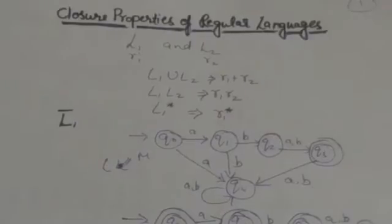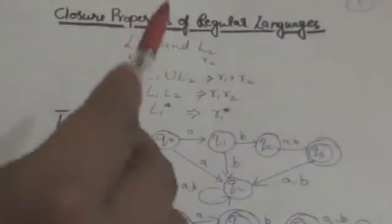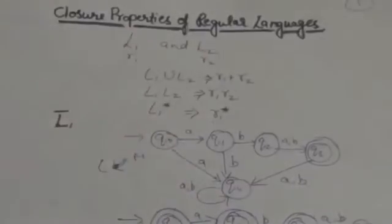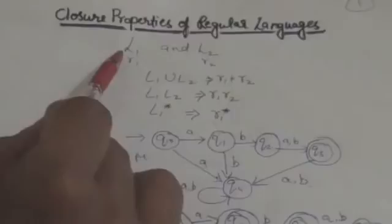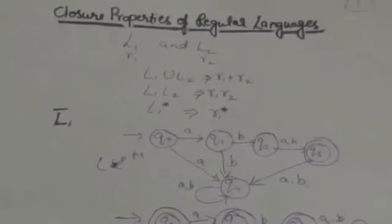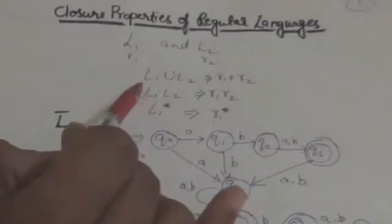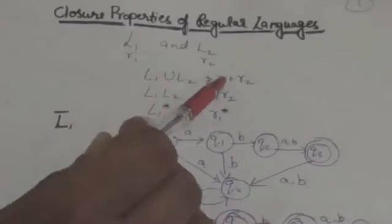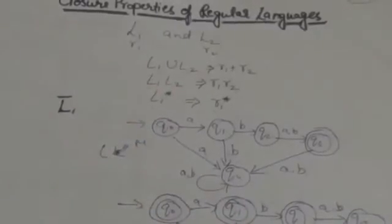Hello friends, welcome back to the tutorial. Our next topic is closure properties of regular languages. Suppose L1 and L2 are two regular languages. R1 is a regular expression which represents L1, and R2 is a regular expression which represents L2. Then L1 union L2 will also be a regular language, and the regular expression corresponding to L1 union L2 will be R1 plus R2.